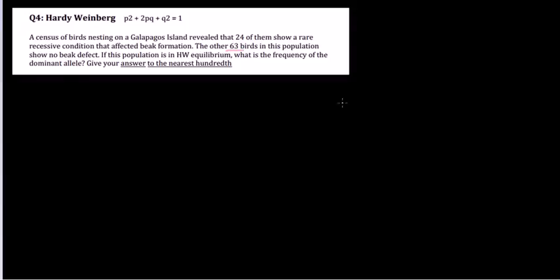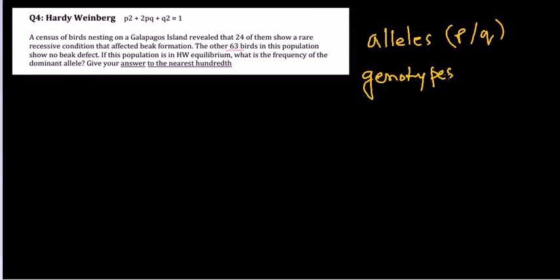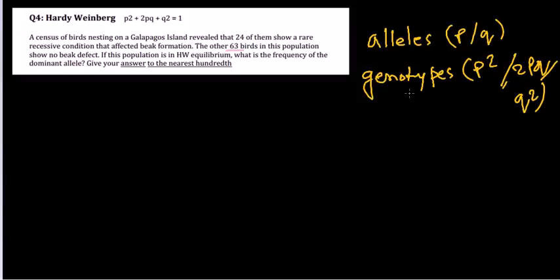The strategy for solving any Hardy-Weinberg equilibrium problem: first, you need to figure out what you are given — whether you are given alleles (small p or small q) or whether you are given genotypes. That is the key thing to figure out first.